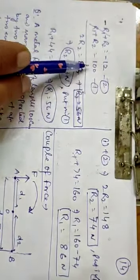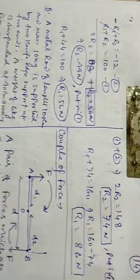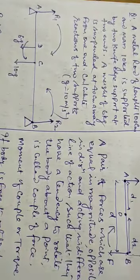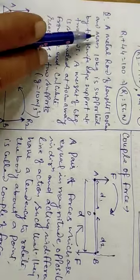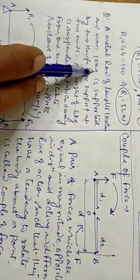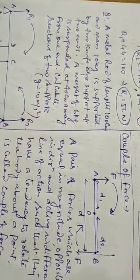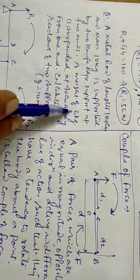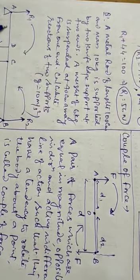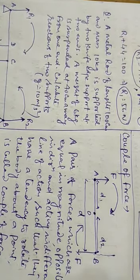The second equation gives us R1 and R2. Now, second question: A metal rod of length 100 cm, mass 10 kg, supported by two knife edge supports at the two ends. A weight of 6 kg is suspended 40 cm away from one end. Calculate the reactions.